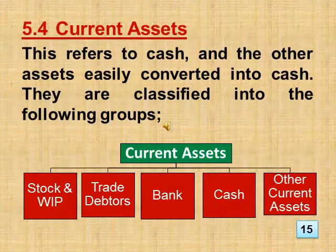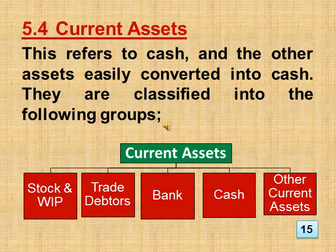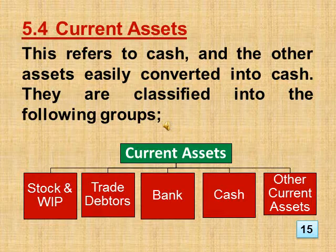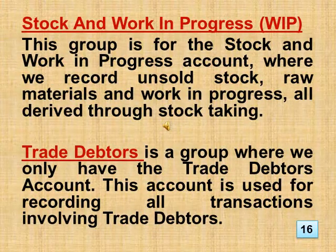Section 5.4 Current Assets. This refers to cash and other assets easily converted into cash. They are classified into the following groups: stock and work in progress, trade debtors, bank, cash, and other current assets. The stock and work in progress group is for recording unsold stock, raw materials and work in progress, all derived through stock taking. Trade debtors is a group where we only have the trade debtors account, used for recording all transactions involving trade debtors.